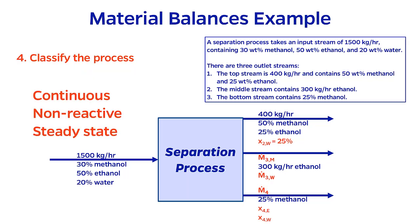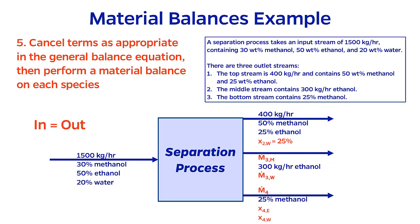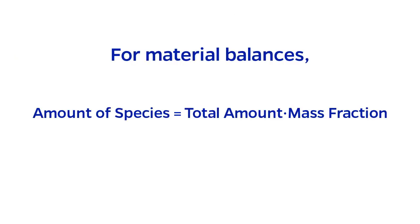Now we classify the process. There are inputs and outputs, so it is continuous. There is no reaction mentioned, so it is non-reactive. We will also assume steady state. This classification means that generation, consumption, and accumulation terms cancel in the general balance equation. We are left with material balances of the form in is equal to out. Now we can derive the material balances, remembering that the amount of a species may be expressed as the total amount times the composition.